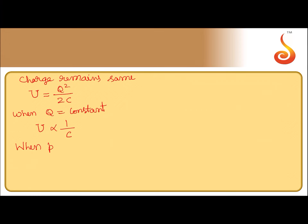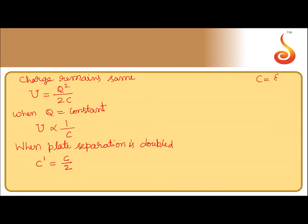When the plate separation is doubled, the new capacitance C' becomes C/2, because capacitance is ε₀A/d. So C' = ε₀A/2d, which equals C/2.